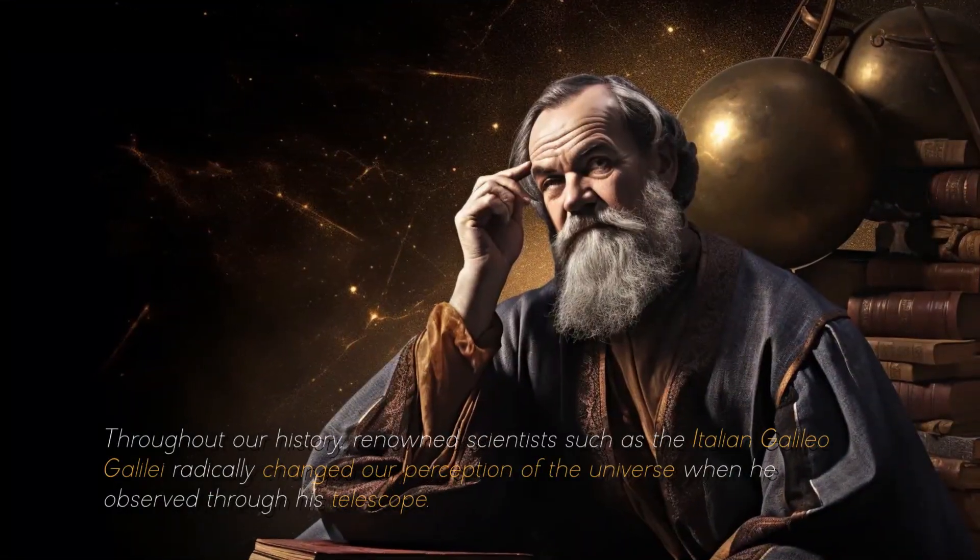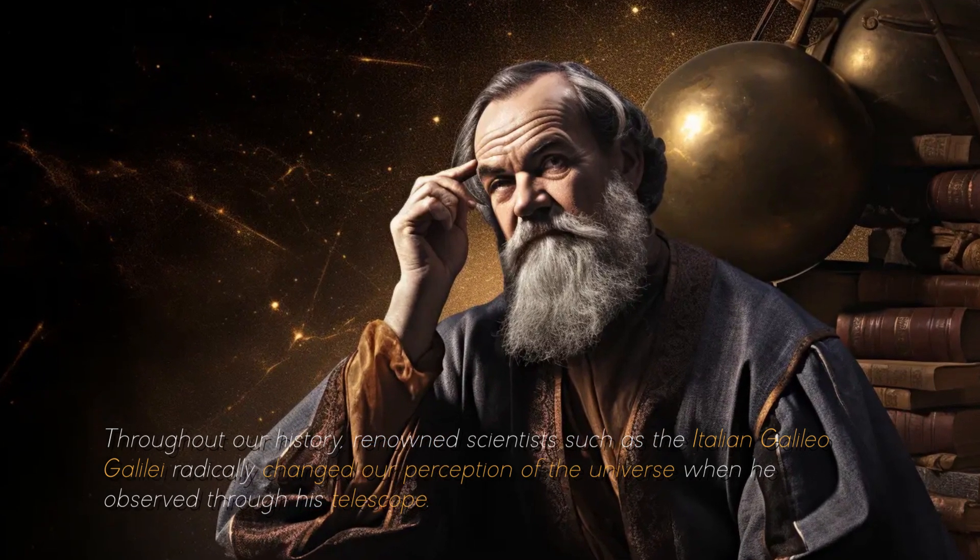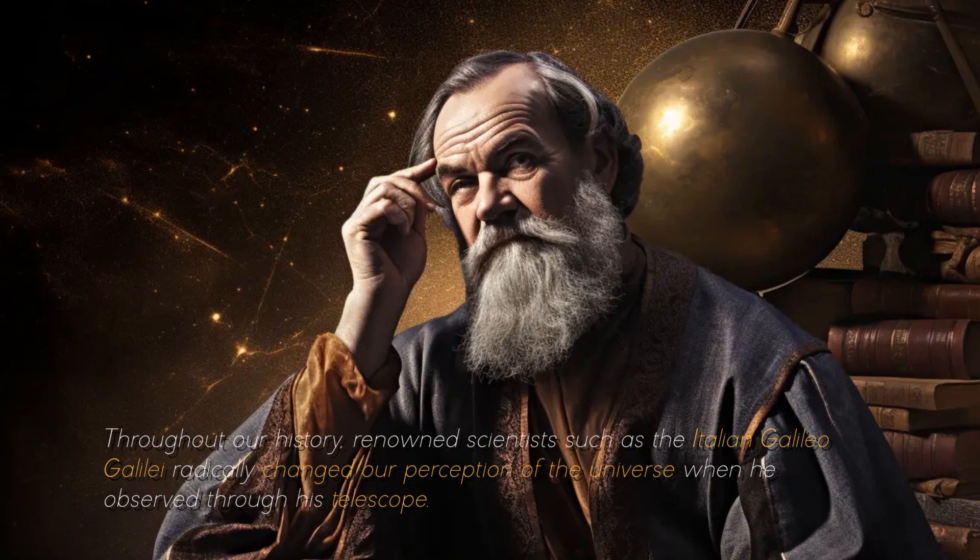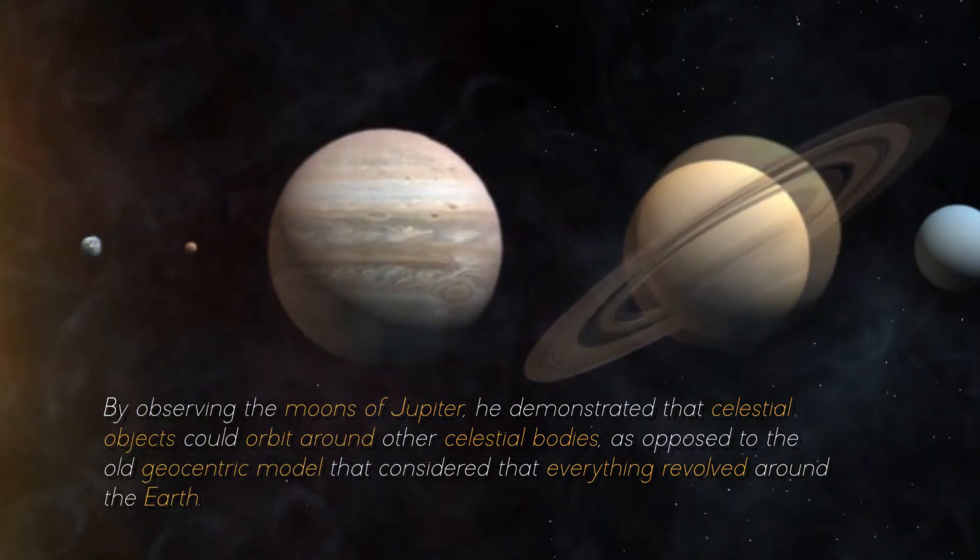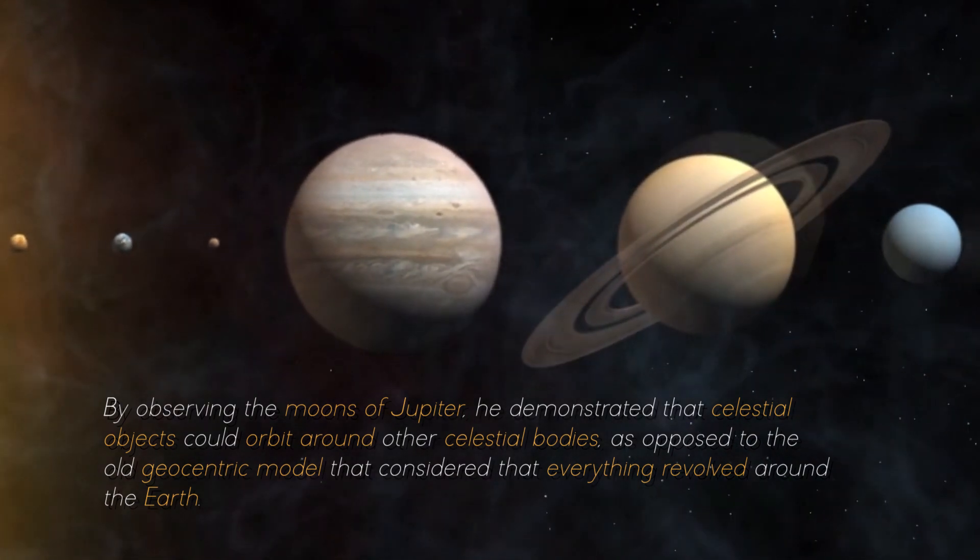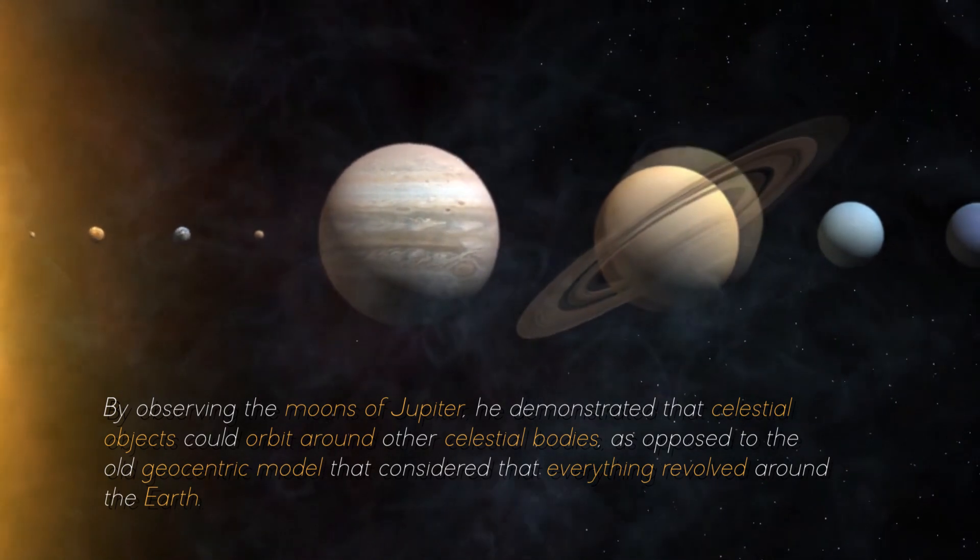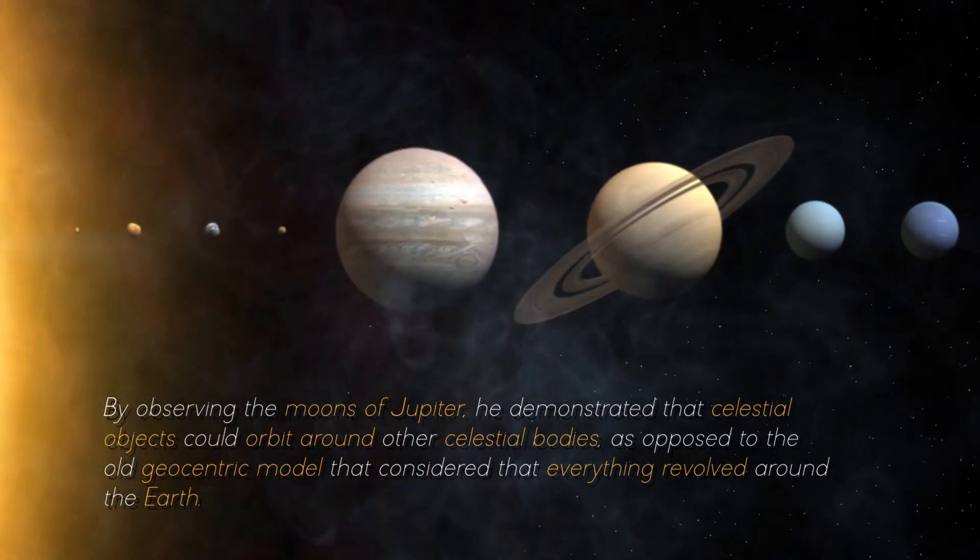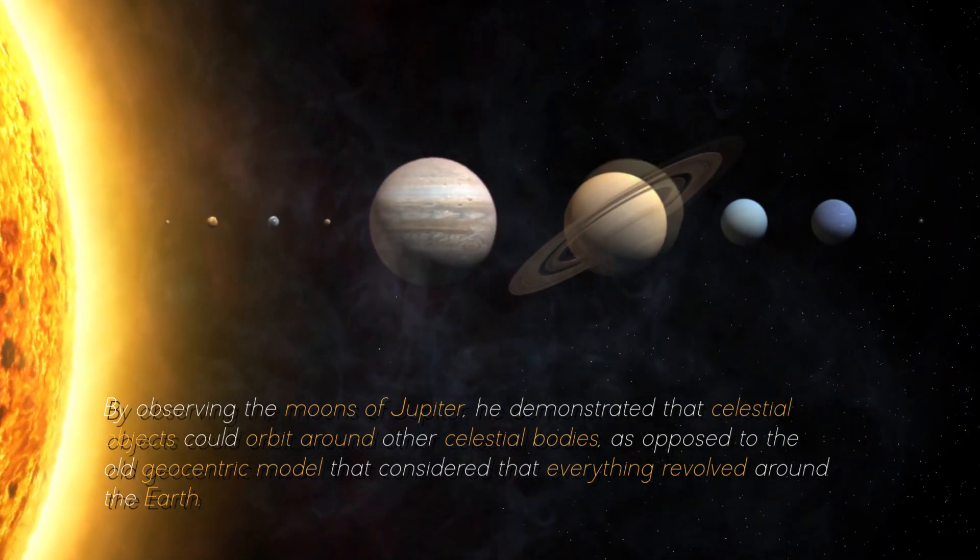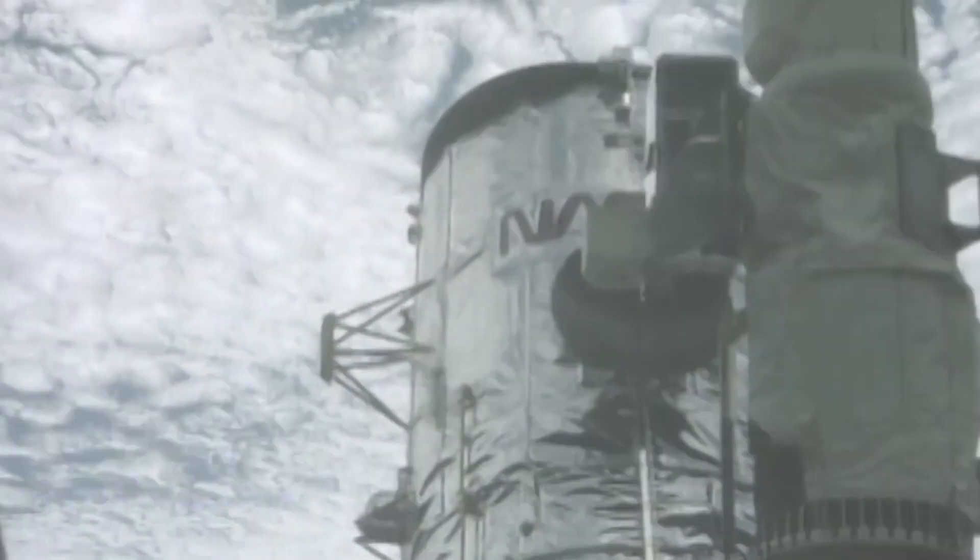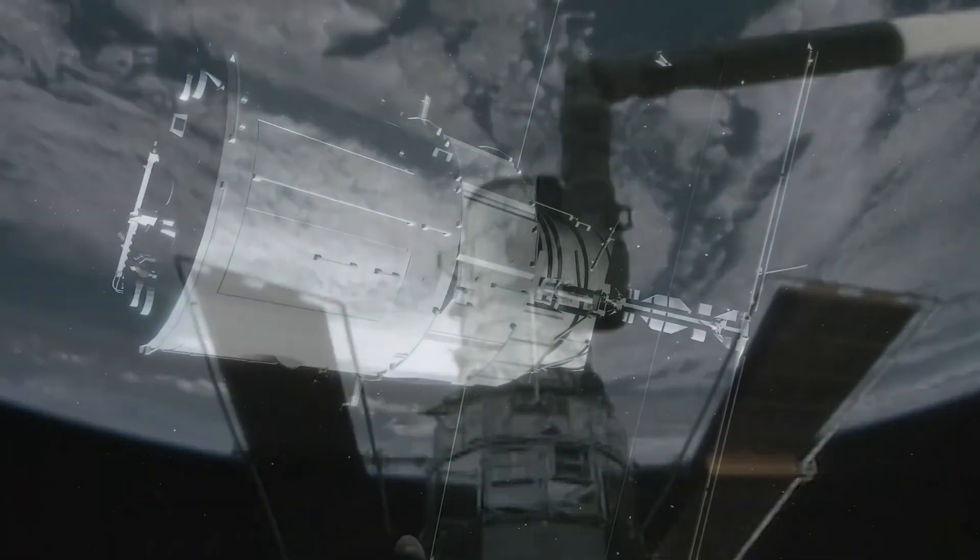Throughout our history, renowned scientists such as the Italian Galileo Galilei radically changed our perception of the universe when he observed through his telescope. By observing the moons of Jupiter, he demonstrated that celestial objects could orbit around other celestial bodies, as opposed to the old geocentric model, thus revolutionizing science and ushering in a new era in astronomy.